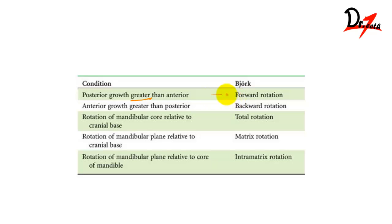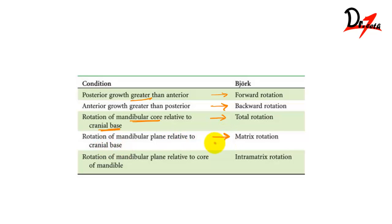Now let's see some terminologies. If the posterior growth is greater than anterior, that is called forward rotation. If the anterior growth is greater than posterior, we call it backward rotation. Rotation of the mandibular core relative to the cranial base is called total rotation, and rotation of the mandibular plane relative to the cranial base is called matrix rotation.